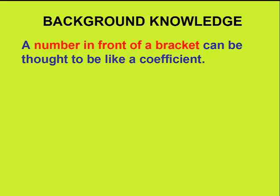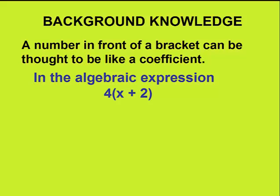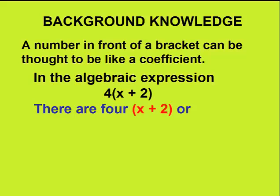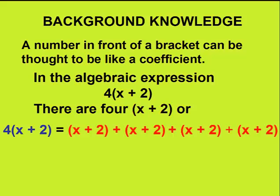A number in front of a bracket can be thought of just like a coefficient. In our new algebraic expression, 4 bracket x plus 2, we can think of this as meaning that there are 4 x plus 2s. We could rewrite this as follows.